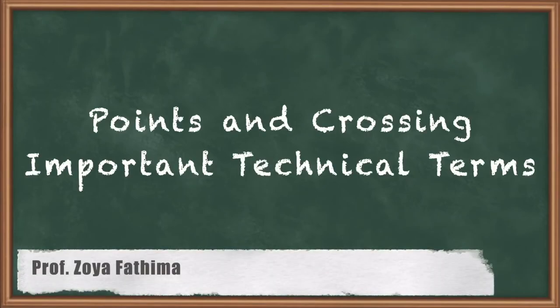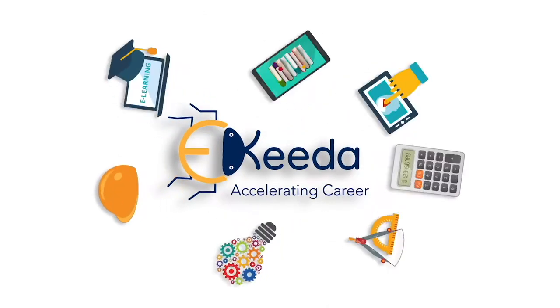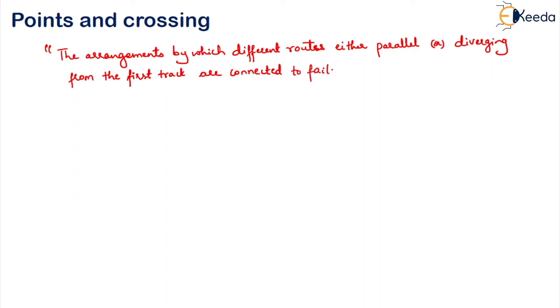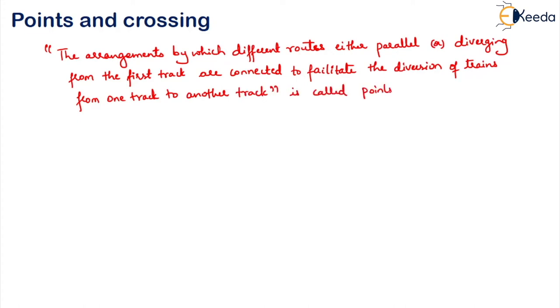In this lesson, let us study about the points and crossings important technical terms. Points and crossings are the arrangements by which different routes, either parallel or diverging from the first track, are connected. Basically, to facilitate the diversion of trains from one track to another track is called points and crossings.